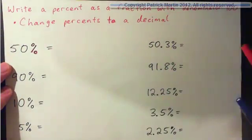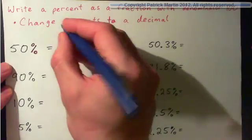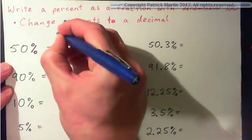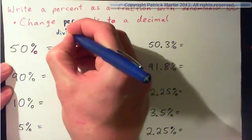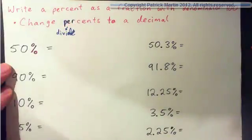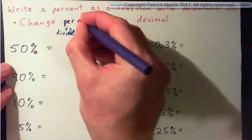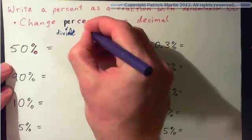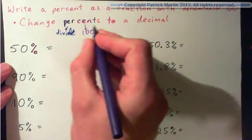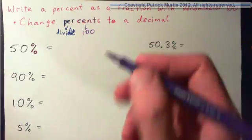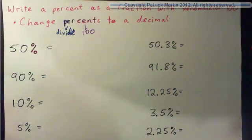The per part means divide. And the cent part means 100. So on the word percent, we have divide by 100 basically. So 50% means 50 per 100. There's 100 cents in a dollar, right? So cent is the Latin word for 100.